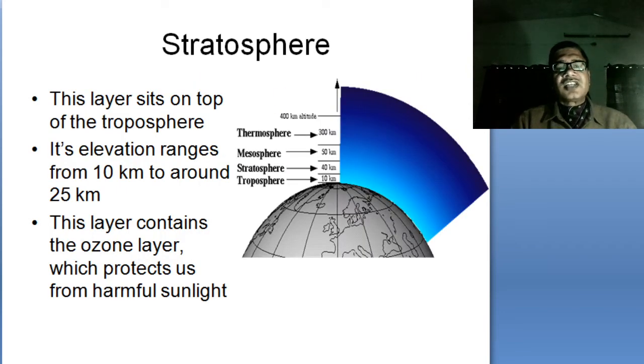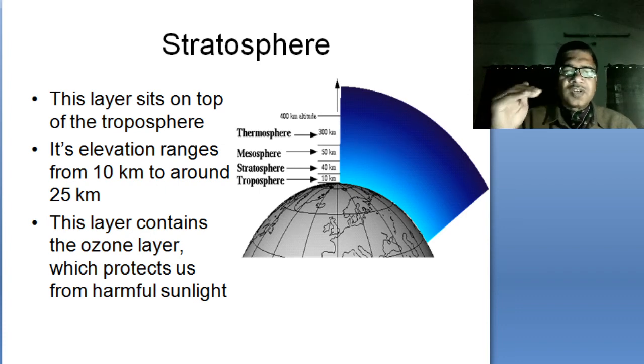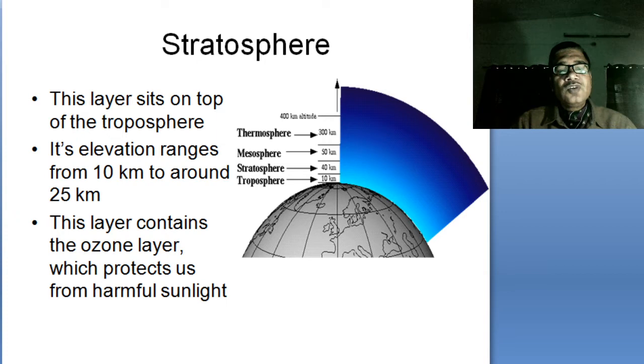Next layer is stratosphere. This layer sits on top of the troposphere. It is after the troposphere that is after beyond 8 to 10 kilometers into the atmosphere. The elevation ranges from 10 to 25 kilometers. This layer contains the ozone layer, which protects us from the harmful ultraviolet sun rays.